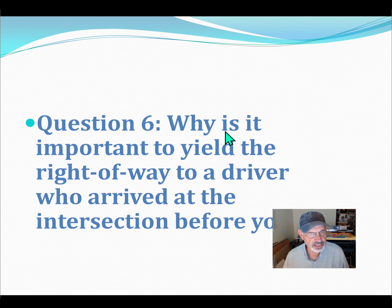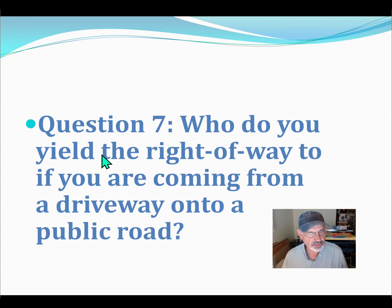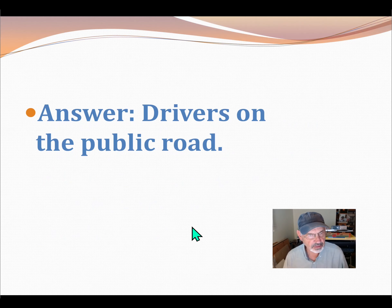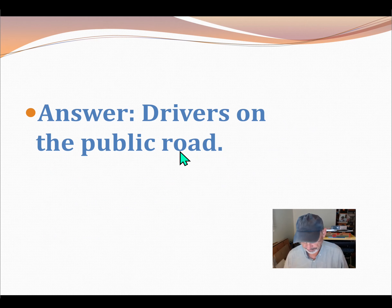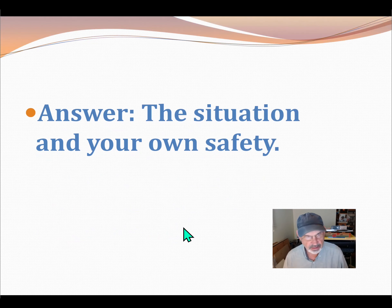Question 6: Why is it important to yield the right of way to a driver who arrived at the intersection before you? Courtesy and safety — that's the rule, that's the law. Question 7: Who do you yield the right of way to if you are coming from a driveway onto a public road? Question 8: What should you always consider even if you think you have the right of way? Answer: The situation and your own safety.